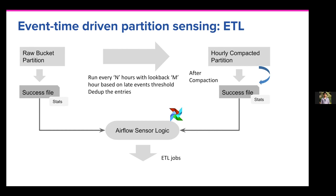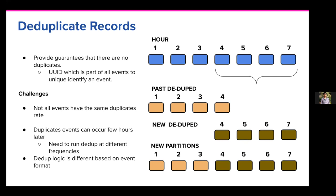We run our compaction process, orchestrated via Airflow, running every N hours, and we also do something called a lookback of M hours. The compactor runs every N hours with a lookback of M hours, and these values depend on the nature of the event being compacted — sometimes duplicate data arrives with varying degrees of lateness, sometimes delayed by 10 minutes, sometimes by multiple hours. Through empirical analysis, we found that not all events have the same delay characteristics, so independently we have configuration that determines the lookback and frequency of compaction for each event type. All events that flow through Lyft have an event ID — essentially a UUID — which is the field we use to deduplicate data over a fixed window.